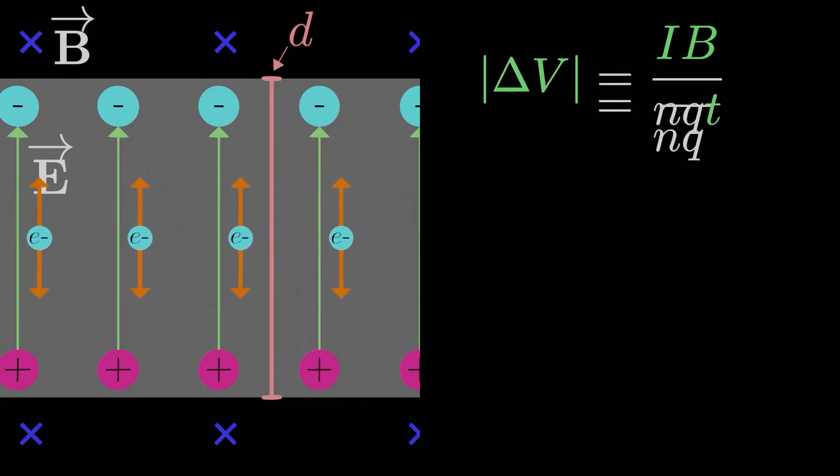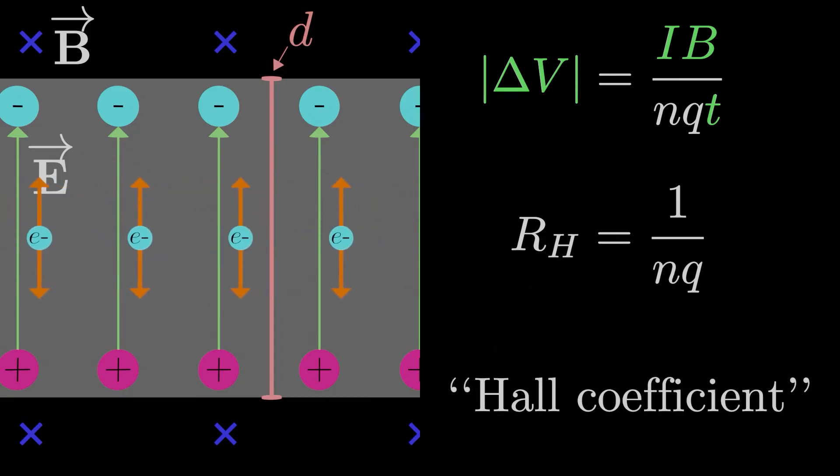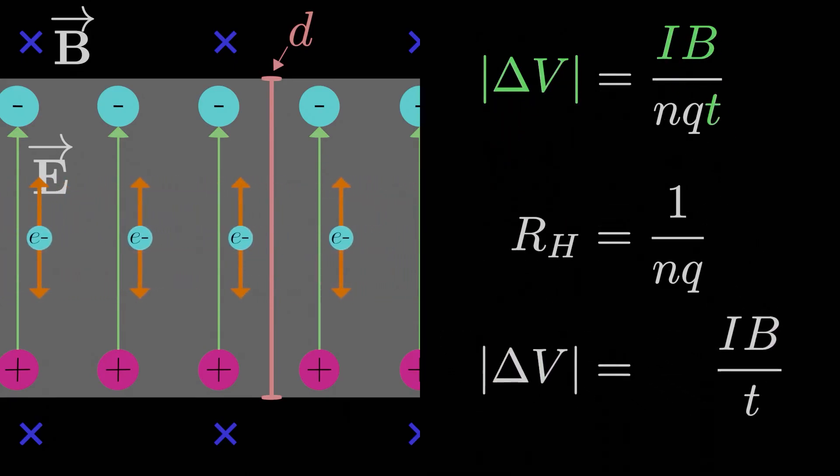Usually this Nq is grouped into a constant called R sub H, where R sub H is equal to 1 over Nq. This R H is known as the Hall coefficient. So if we know the magnetic field, we can determine a reasonable value for the Hall coefficient for the metal that makes up the slab.